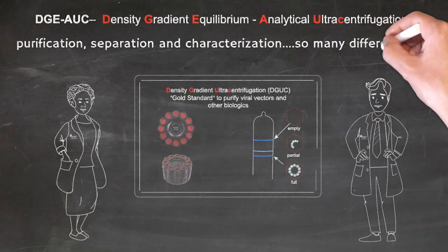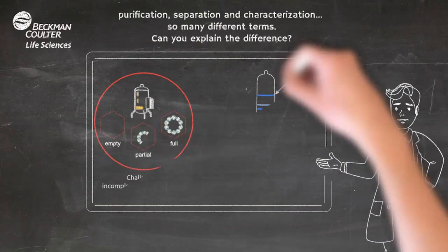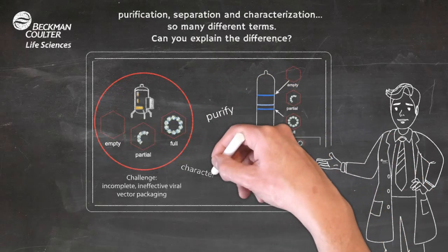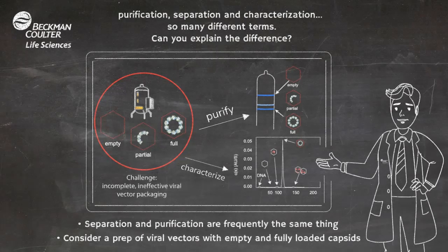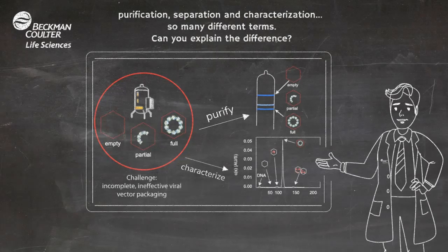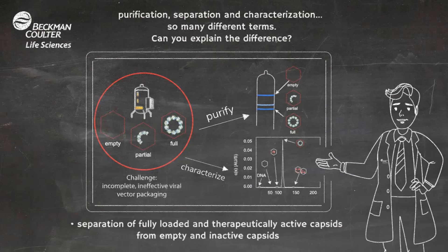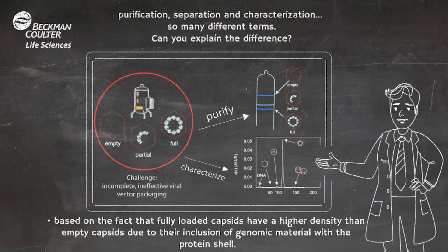Purification, separation, and characterization — so many different terms. Can you explain the difference? Separation and purification are frequently the same thing. Consider a preparation of viral vectors with empty and fully loaded capsids. Your objective is to purify the therapeutically active product, which is the full particle containing the gene of interest. It can alternatively be thought of as separation of fully loaded and therapeutically active capsids from empty and inactive capsids. Either way, the process is based on the fact that fully loaded capsids have a higher density than empty capsids due to the inclusion of genomic material within the protein shell.